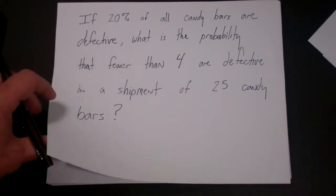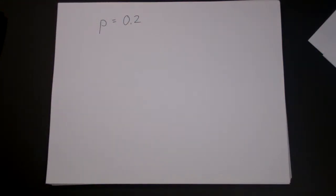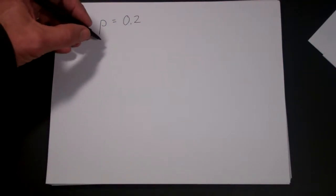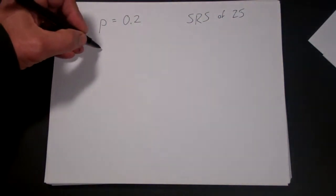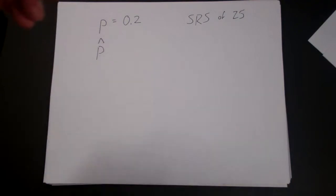Let's look at this particular problem. If we think about this problem, p is equal to 0.2, that's the proportion of candy bars that are defective. And what we want to know is, if you think about taking a shipment of 25, that's like a simple random sample of 25. From that simple random sample, we can calculate p hat, and how we calculate p hat is we simply say what proportion of the 25 are bad.